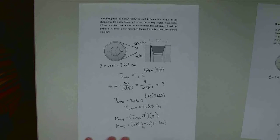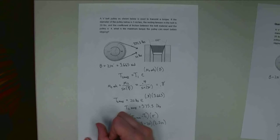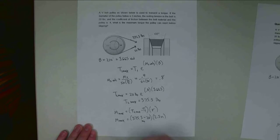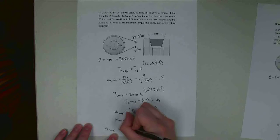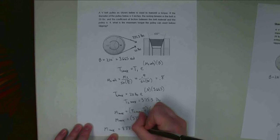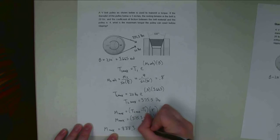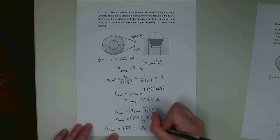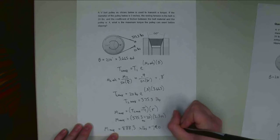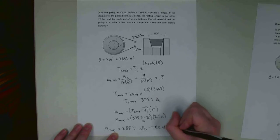All right, so if I solve for M max, I'm going to get 888.3 inch pounds. That's the maximum moment before it starts to slip. Or if I want to use the more common unit of foot pounds for the English system, simply divide this whole thing by 12, and I end up with 74.0 foot pounds of torque.